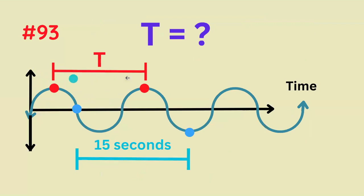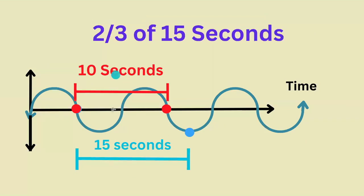What's the period of this wave if this horizontal distance is 15 seconds? If we superimpose them together, we see that T is two-thirds of 15 seconds, so it's got to be 10 seconds.